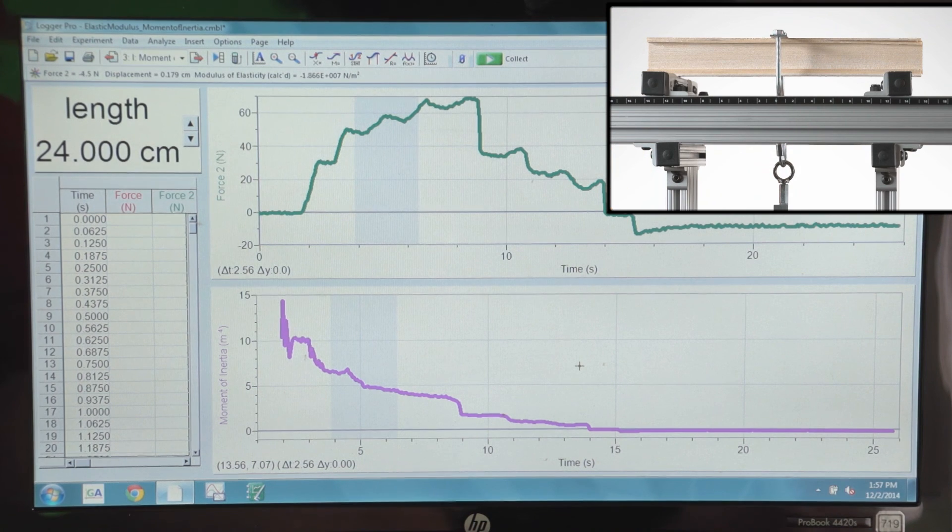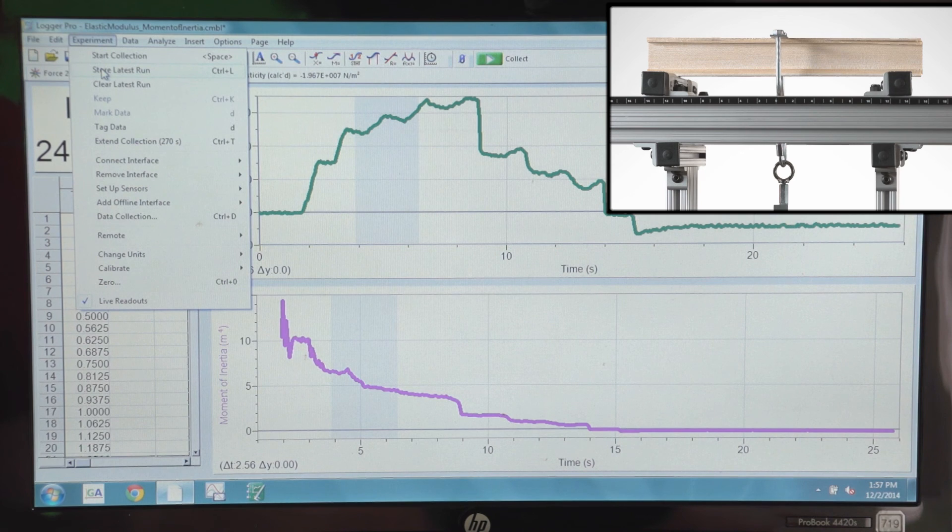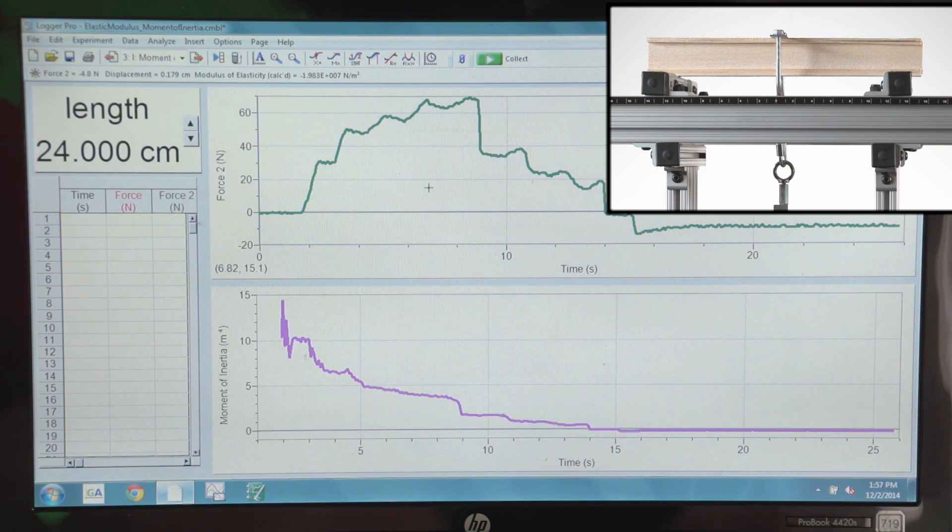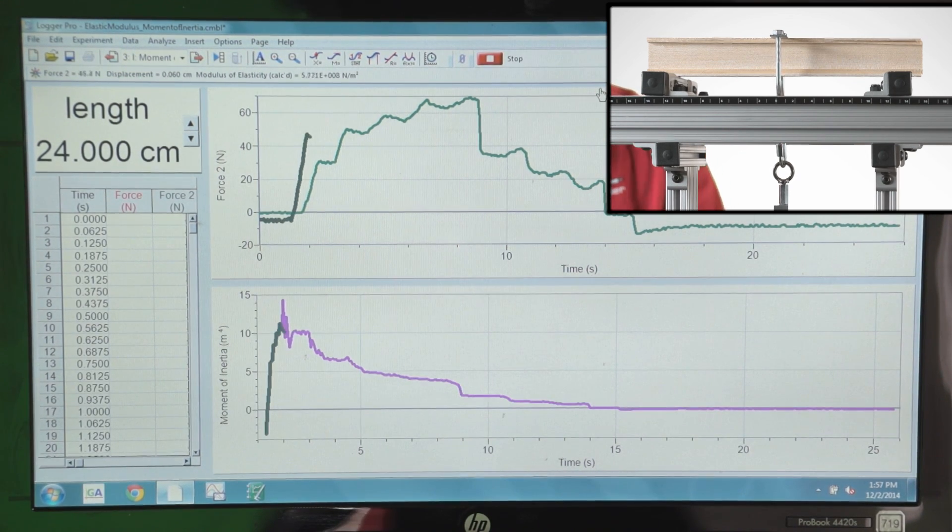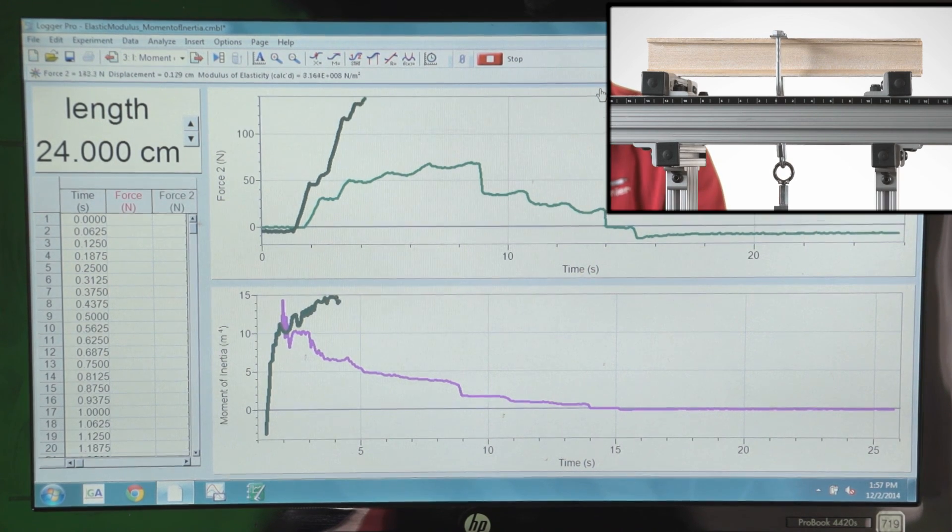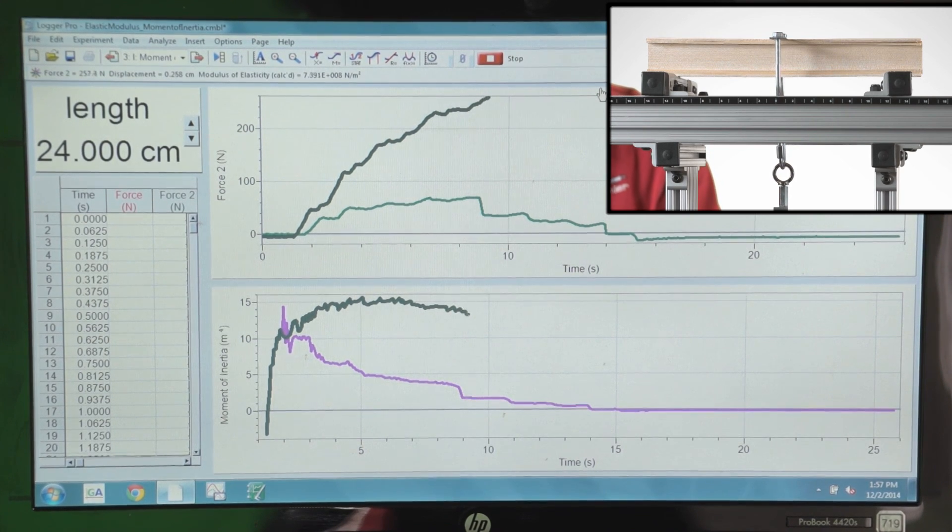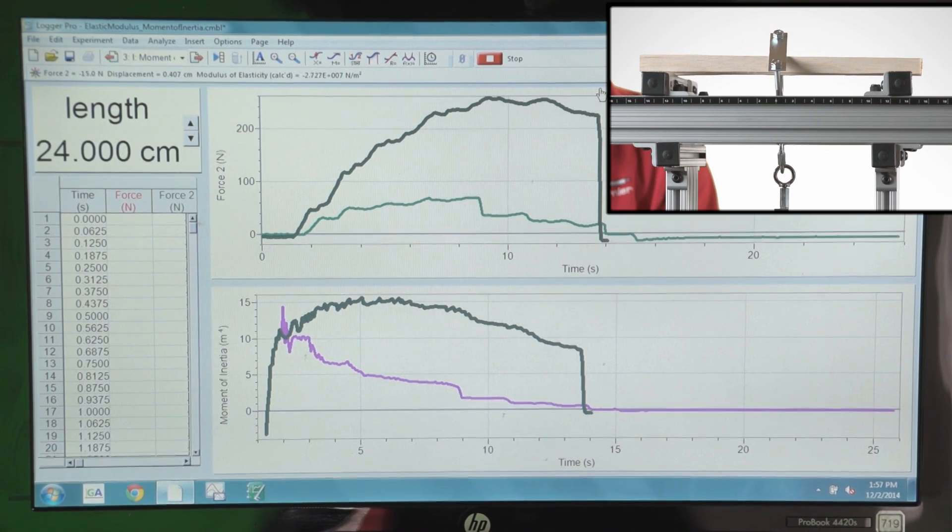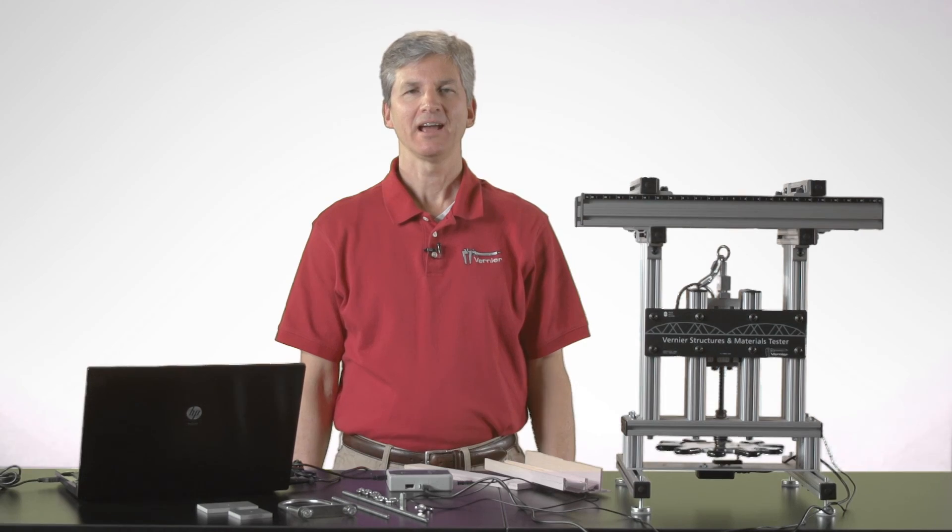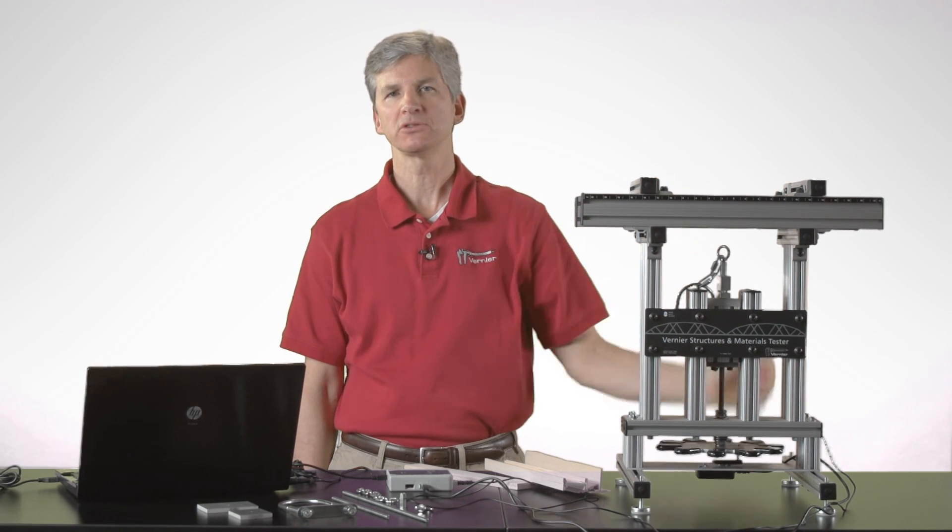In order to compare these side by side, I want to go ahead and save this data. So I'm going to say store latest run, and we should be able to run side by side data collection here. So I'll hit collect again, and then begin to apply a force. You can see the force applied is much greater already. You can see the calculated moment of inertia on the bottom, and there we have failure of that beam. And that's the Vernier Structures and Materials Tester as it applies to testing beams in your class.